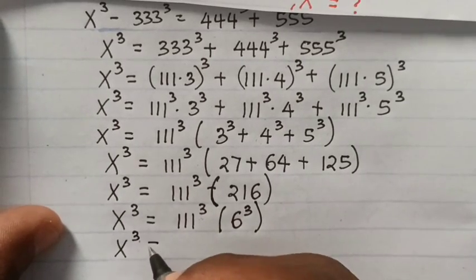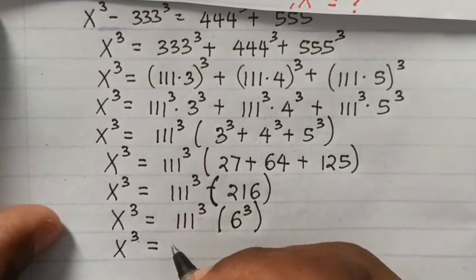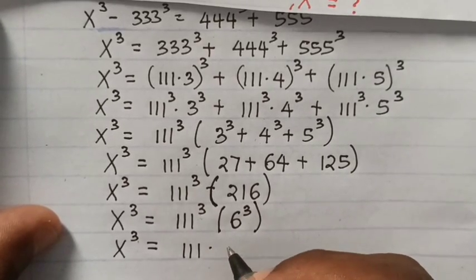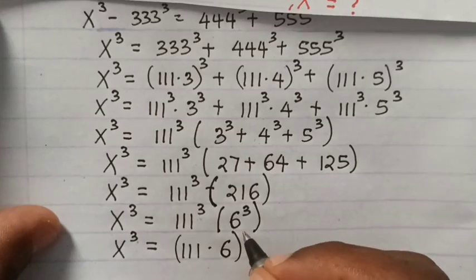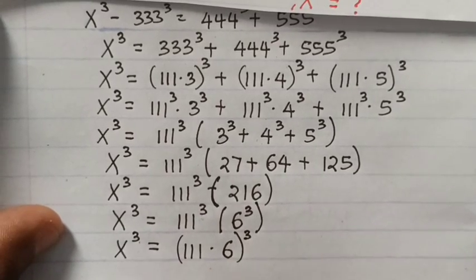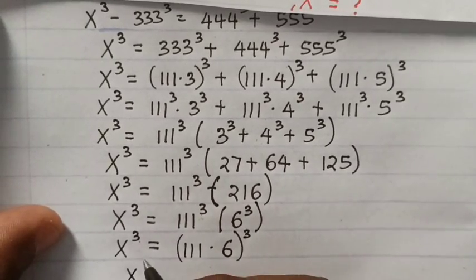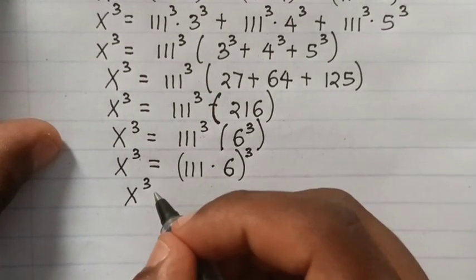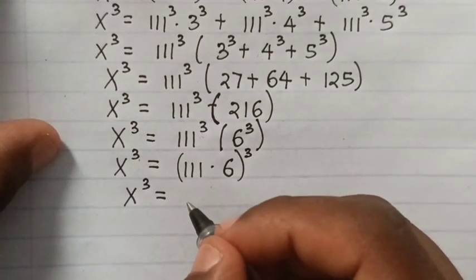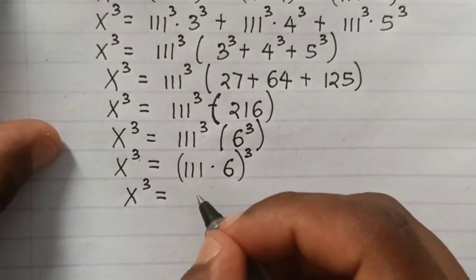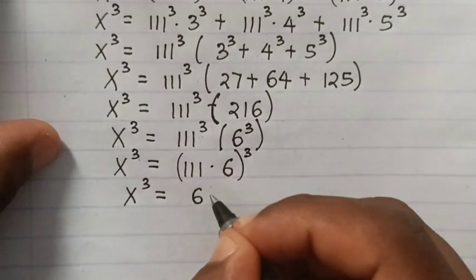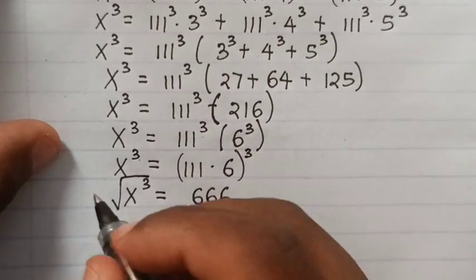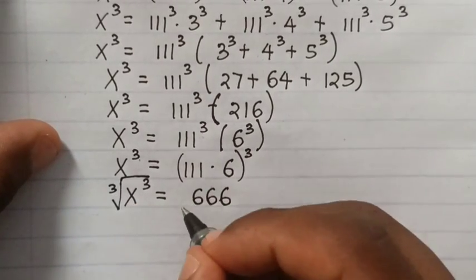Then x³ equals 111³ times 6³, which equals (111 times 6)³, so x³ equals 666³. Therefore x equals 666.